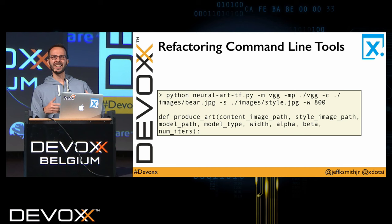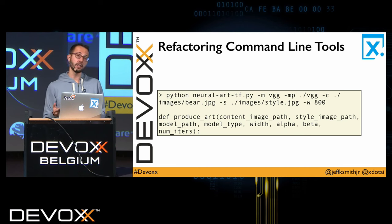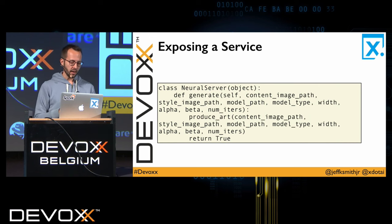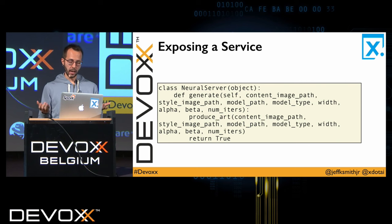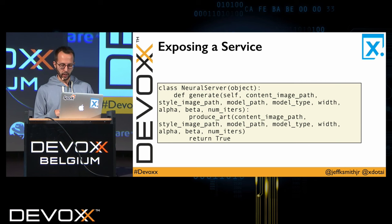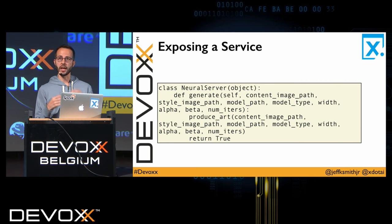The approach I'm going to take to make all of this easier and more reliable is to expose this as a service. Still in Python, we're going to define a server which exposes an endpoint that allows us to produce our art and return a successful value as a true boolean — just wrapping up the function and instantiating a server instance.